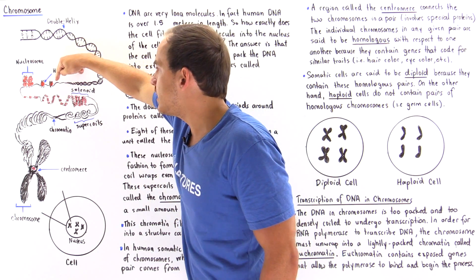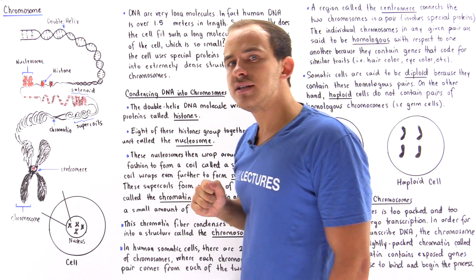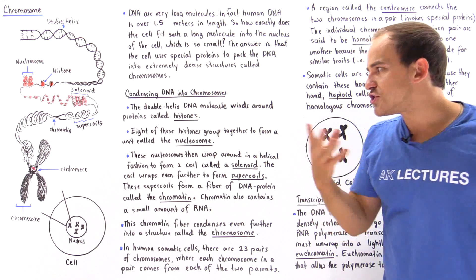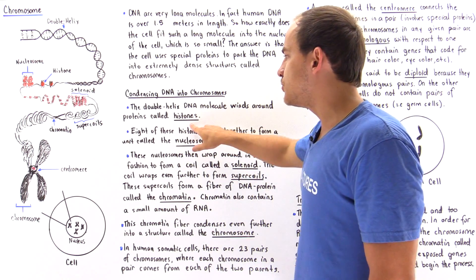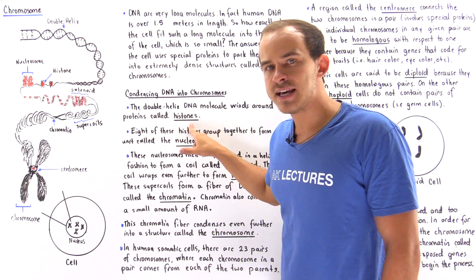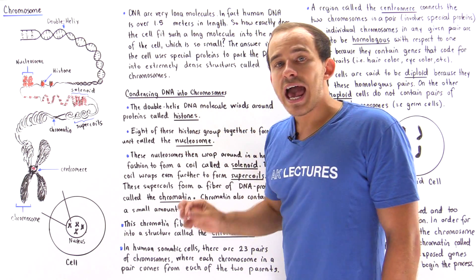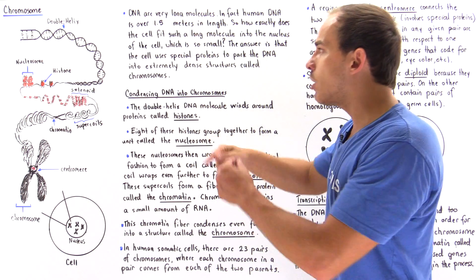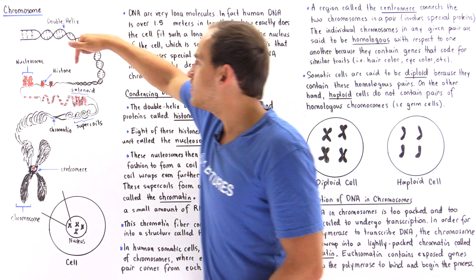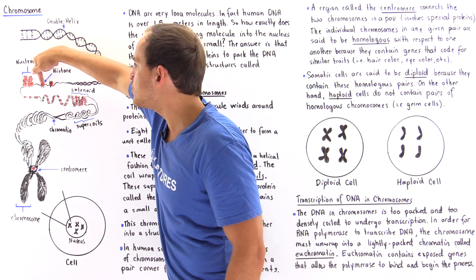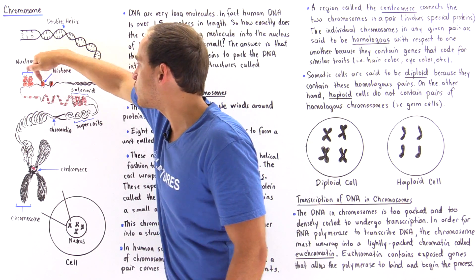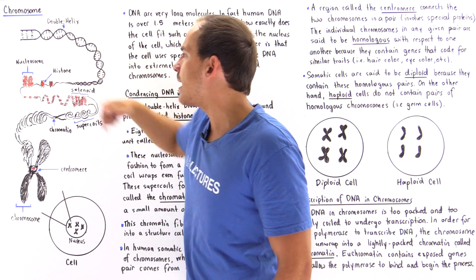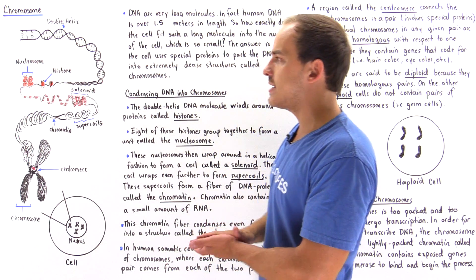At this point, the cell uses special types of proteins known as histones, and it wraps the double helix DNA around our histones. The histone is shown in brown, and this is our DNA being wrapped around that histone.